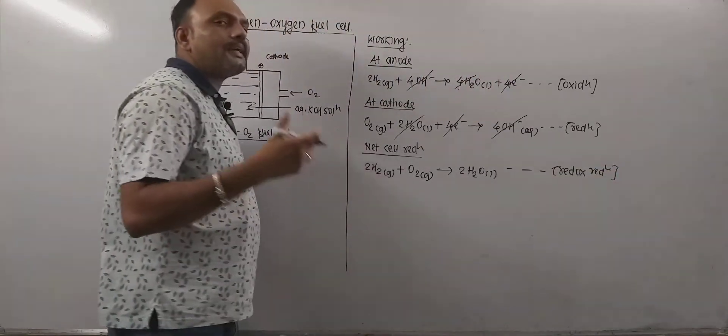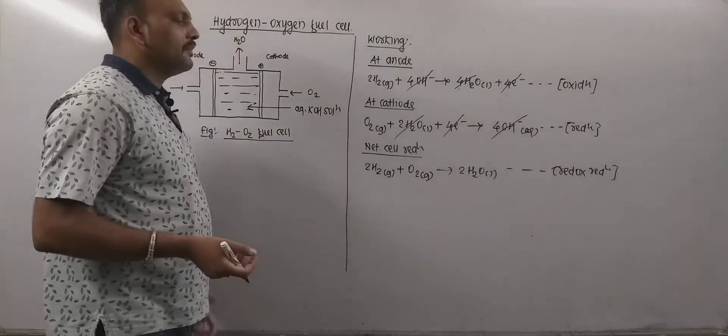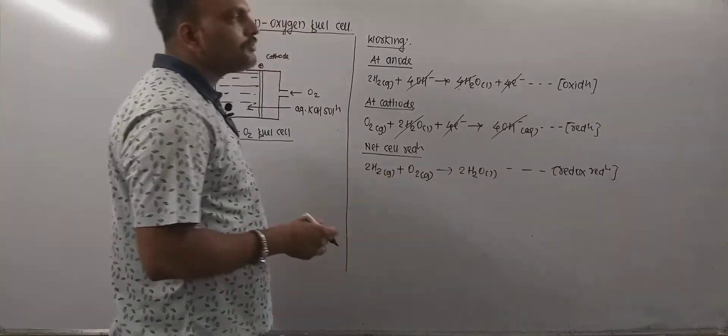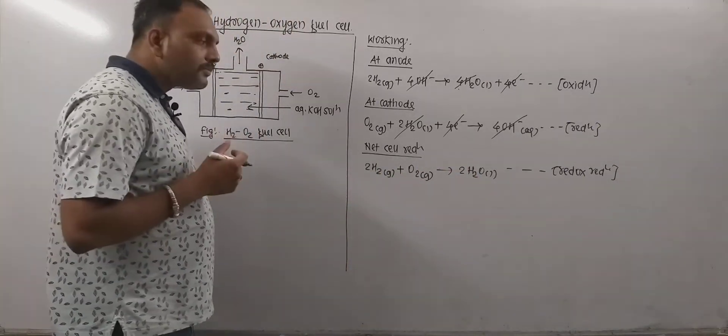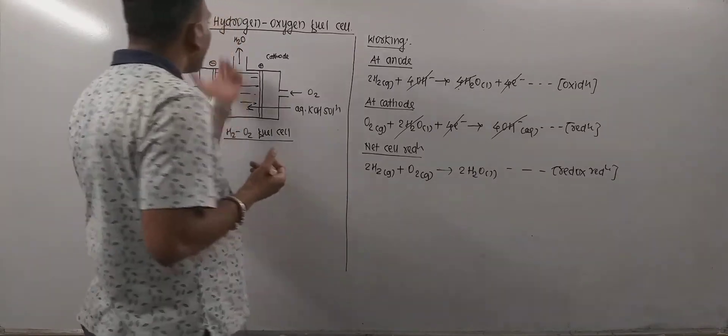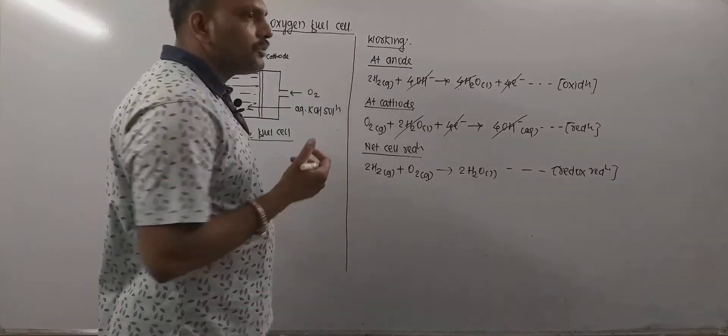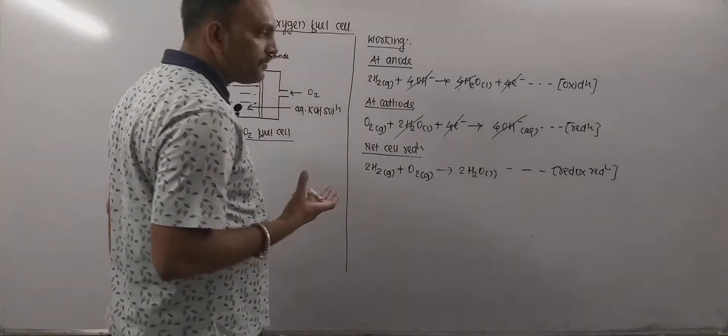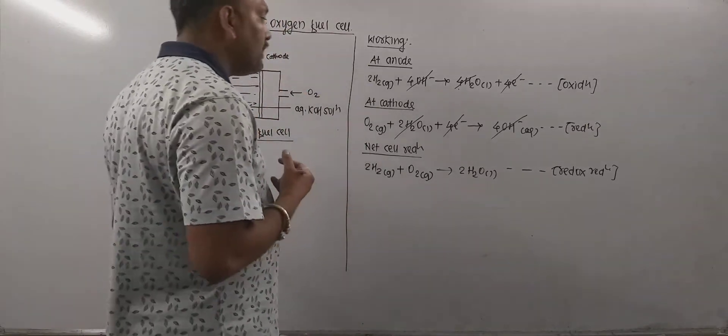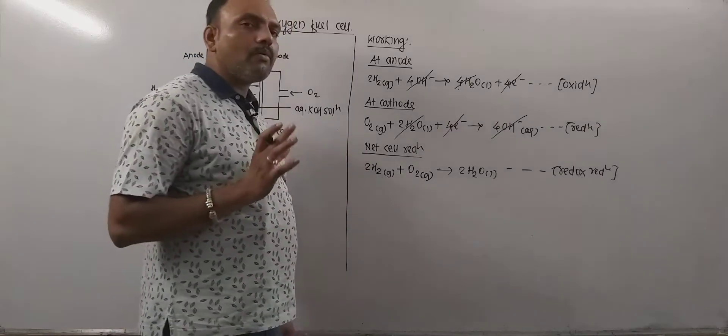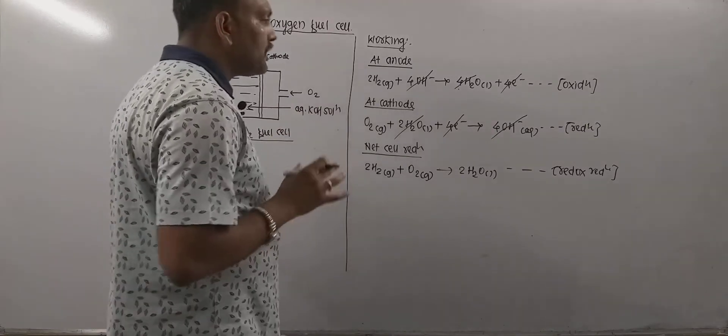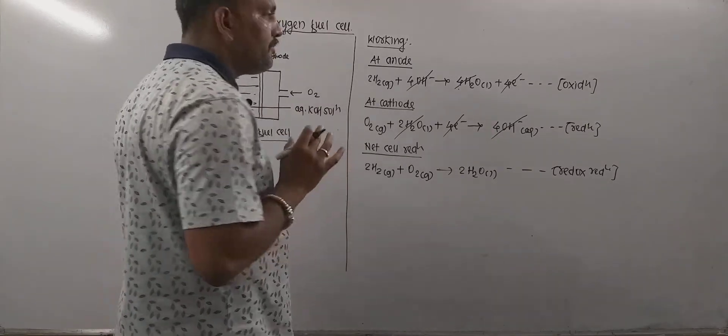Now the net cell reaction is the combination of hydrogen and oxygen producing water. And earlier I told that the water formed or water draining out through the cell during the course of operation is exceptionally pure. So that can be drunk also. So net thing is overall reaction is the combustion of hydrogen whatever we are using as a fuel.